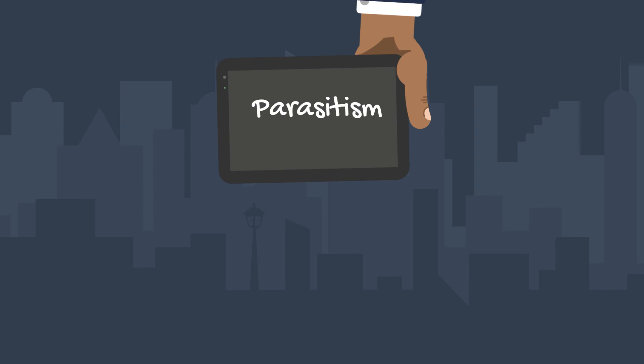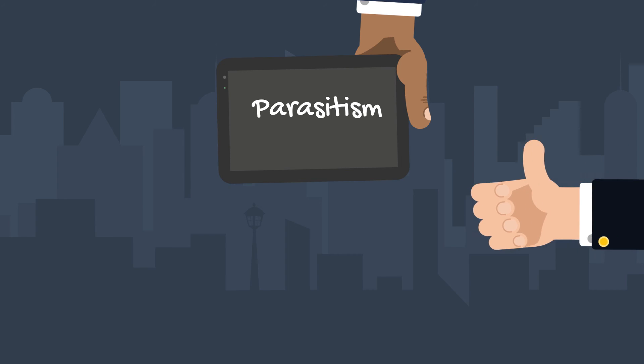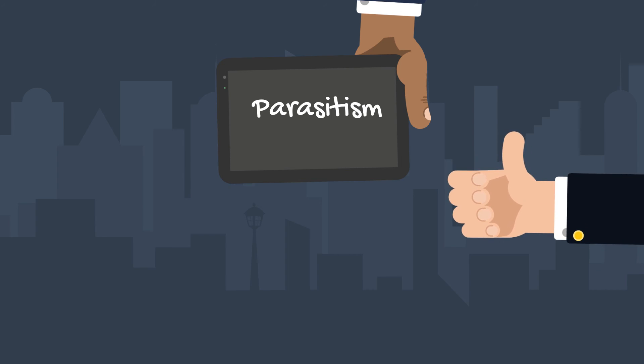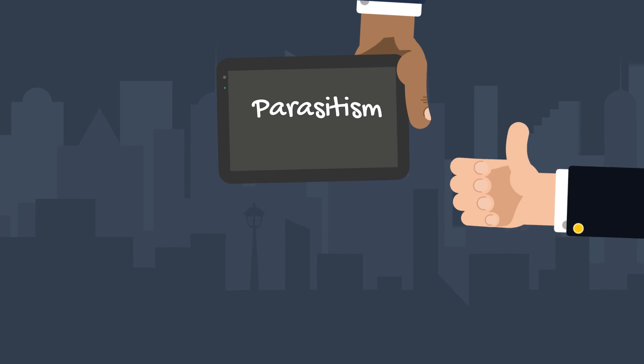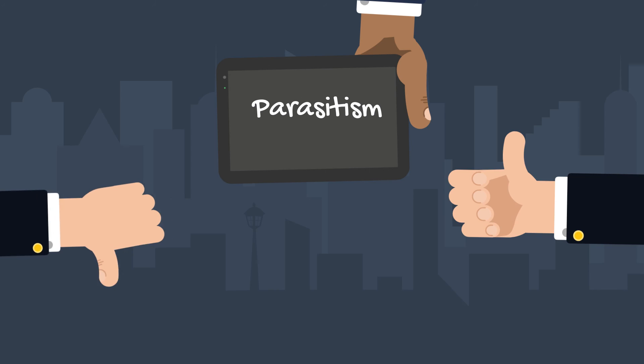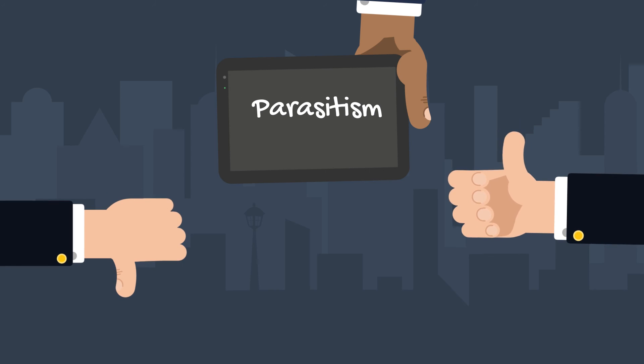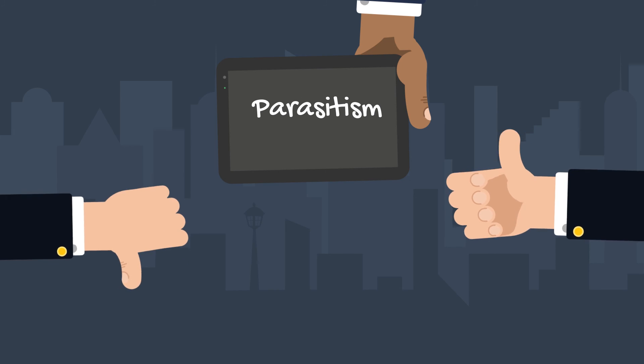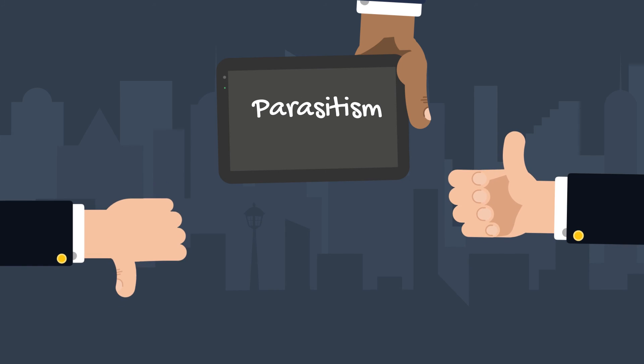Parasitism is a symbiotic relationship in which one organism benefits and the other organism is harmed and, in some cases, may die. Let's take a look at some examples.